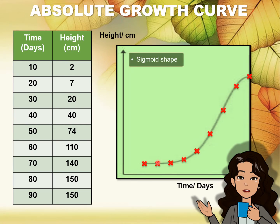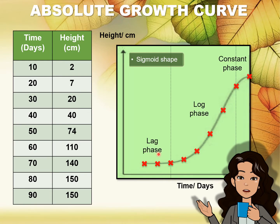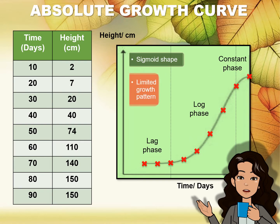The shape of the curve is a sigmoid shape. Sigmoid shapes show three stages of growth. The first stage, which we call the lag phase, is when the increase in height is very slow, showing that growth is occurring slowly. The log phase is where the increase in height is happening very quickly, where growth is now fast. But eventually, at the constant phase, the increase in height is less and in fact there is no more increase in height. So that is the constant phase where growth has become limited.